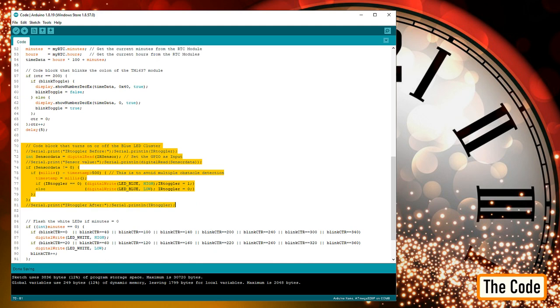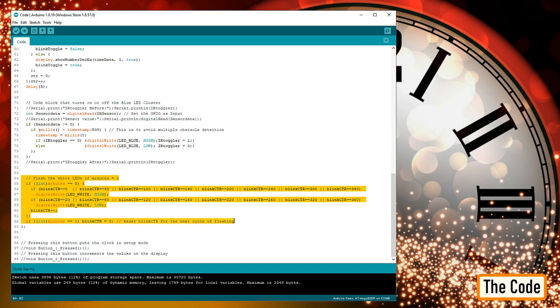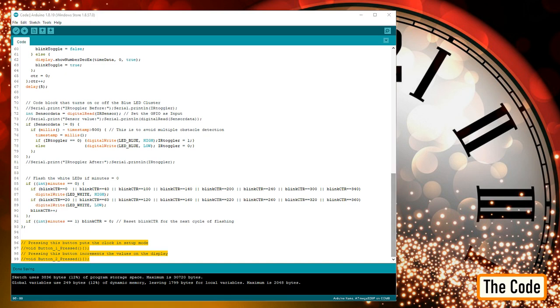This section is used to read the value of the IR sensor and either turn on or off the blue cluster of LEDs. This bit of the code is to flash the white LEDs when the minute counter resets to zero. If you are planning to use the two push button switches to set the time or to set the alarm, go ahead and uncomment this bit of the code and add your code block to it.